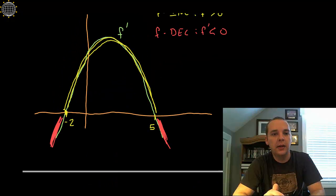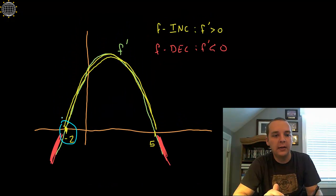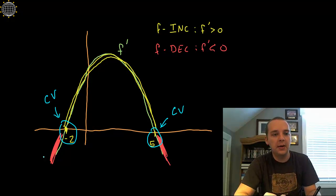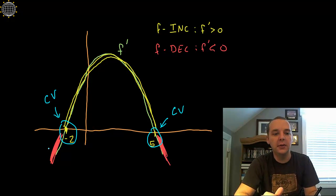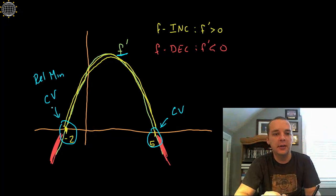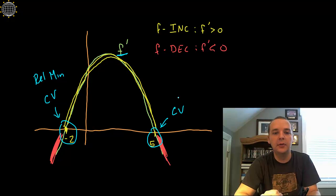Going back to this graph, we already identified that negative 2 was a critical value because the first derivative was 0 there — it went through the x-axis — and 5 was a critical value because the derivative is 0 there. At this first critical value, the original function goes from decreasing to increasing because its slopes go from negative to positive. So decreasing to increasing means that negative 2 would be a relative minimum. Then from positive derivative to negative derivative, x equals 5 would be a relative maximum.